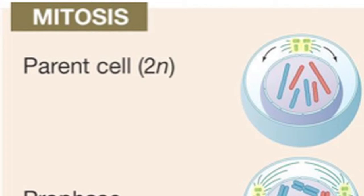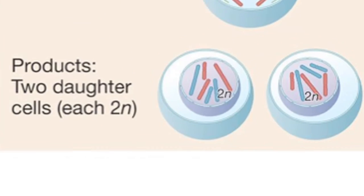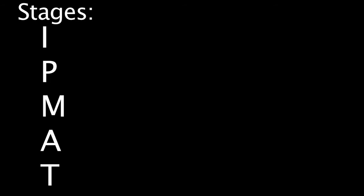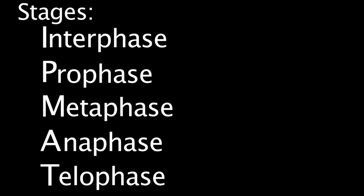Mitosis starts with a parent cell, which progresses through several stages and produces two daughter cells. The stages the cell goes through are IPMAT: interphase, prophase, metaphase, anaphase, and telophase.